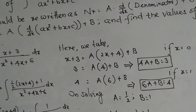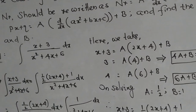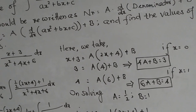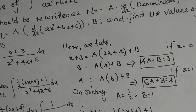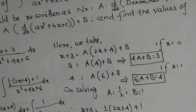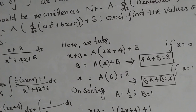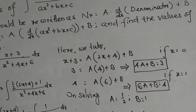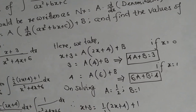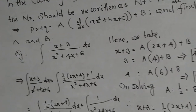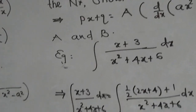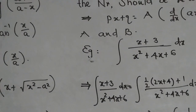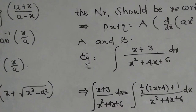After getting the values A equals 1/2 and B equals 1, rewrite the numerator: x plus 3 equals 1/2 times (2x plus 4) plus 1. Do not simplify the right-hand side — if you do, you get x plus 3 equals x plus 3, and there is no progress. So keep the right-hand side as (1/2) times (2x plus 4) plus 1. Now the integral becomes the integral of [(1/2)(2x plus 4) plus 1] divided by (x squared plus 4x plus 6) dx.